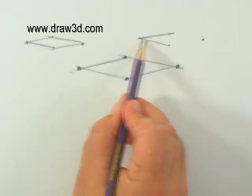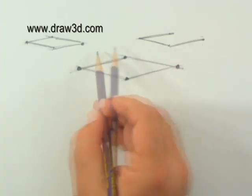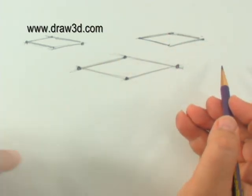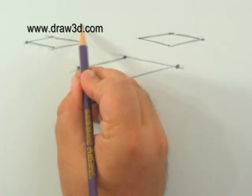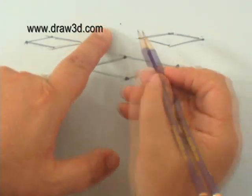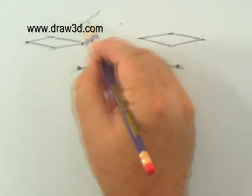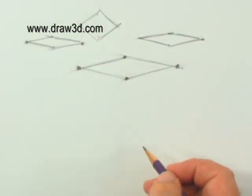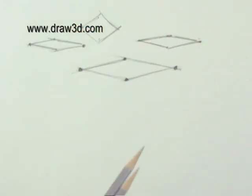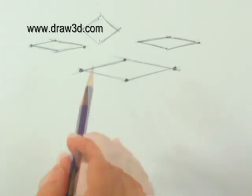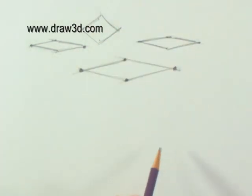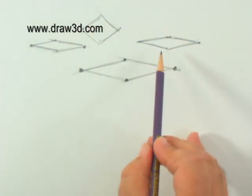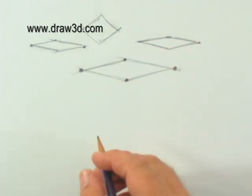A common mistake students make when they first start drawing these foreshortened squares is they'll put the two dots like this, and then they'll put their finger, but then they'll put the dots too far apart like this. And it opens up like that. This is OK. It's just going to be more of a skewed picture. It's going to be too open. I want to squish it. I want to make it more foreshortened. So these are really squished foreshortened squares.